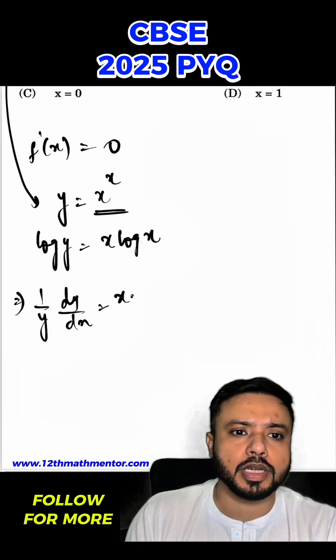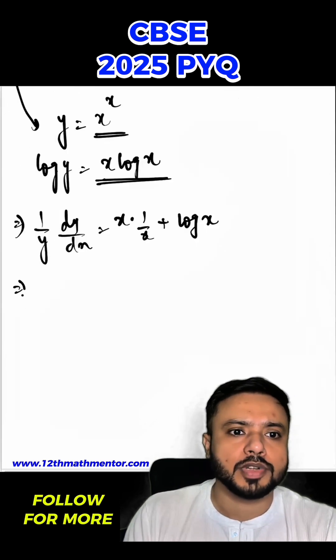dy/dx will be equal to x * (1/x) + log x. Basically on this side I have used product rule of differentiation. So when I differentiate it, I'll get dy/dx = y